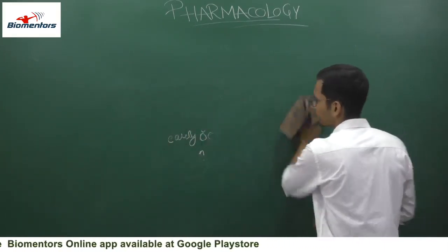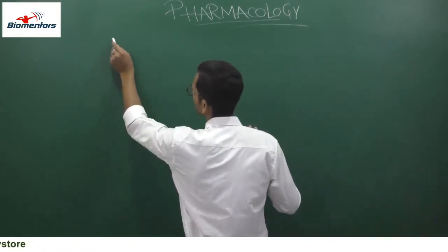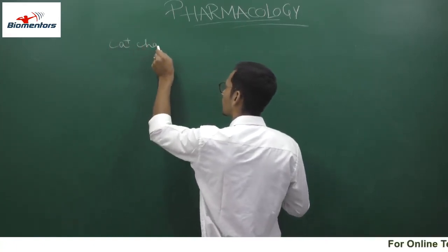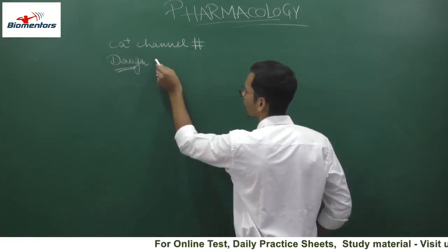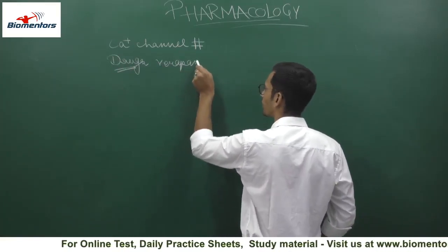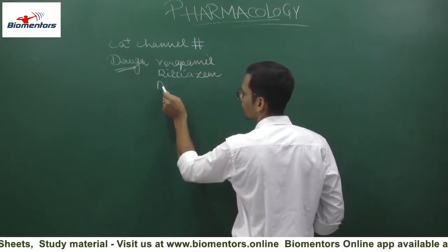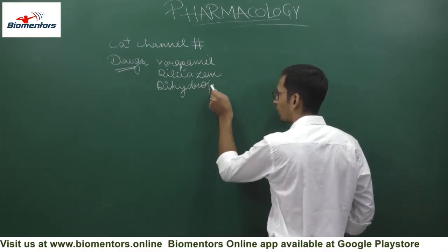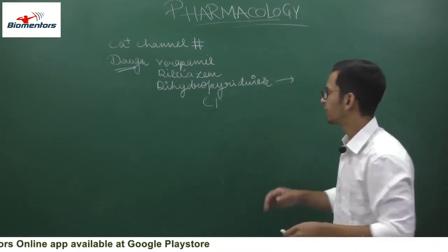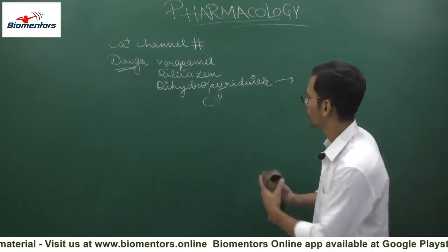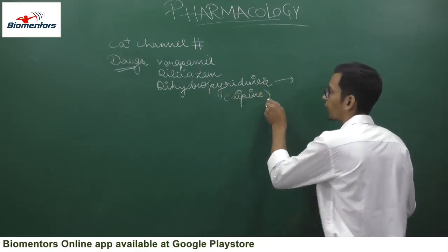Now moving on towards calcium channel blockers, the next class of drug. We have previously discussed renin-angiotensin system inhibitors and thiazides. In calcium channel blockers, we have verapamil, diltiazem, and dihydropyridines. Dihydropyridines share a common ending — the suffix '-dipine.'